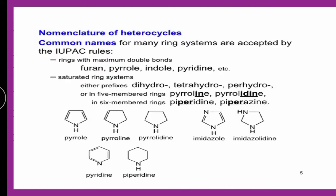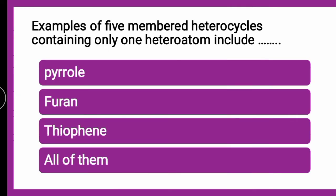Moving to the next question — examples of 5-membered heterocycles which contain only one heteroatom include dash. Now here the question is specific: it is 5-membered heterocycles. So which 5-membered heterocycles contain only one heteroatom — whether it is pyrrole, whether it is furan, whether it is thiophene, or all of them? The correct answer is all of them.